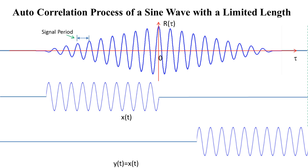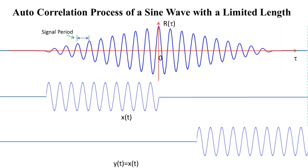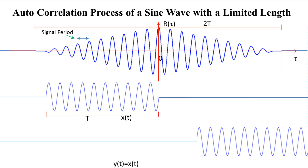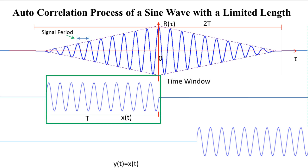Basically, the autocorrelation function of a periodic signal is also periodic. The width of the autocorrelation function doubles that of the length of the sine wave itself. The dwindling of the correlation function at both the negative and positive ends is due to the time window of the sine wave — data outside the sampling window are assumed to be zero during the correlation calculation.